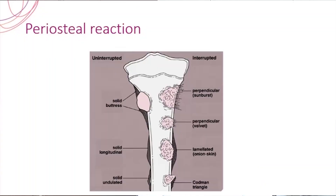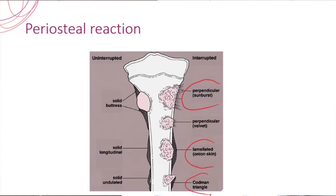Then comes the most important periosteal reaction. A periosteal reaction is of two types — it could either be interrupted or uninterrupted. An uninterrupted periosteal reaction says that it is a benign lesion. If it is an interrupted periosteal reaction, then the possibility of being malignant is high. The interrupted periosteal reaction can be a perpendicular periosteal reaction, a lamellated one, or a Codman triangle. If the periosteal reaction is going perpendicular to the long axis of the bone, that gives the classical sunburst appearance in osteosarcoma.